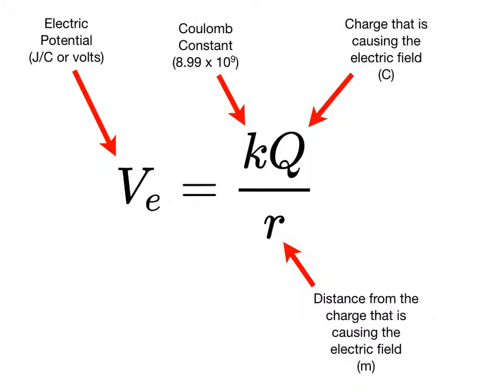This equation allows us to predict the electric potential at a location that is a distance R from the charge, big Q, which is creating the field.